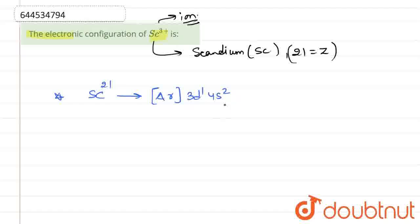AR, 3D1, 4S2. The reason being that AR has an atomic number of 18 and contains 18 electrons.